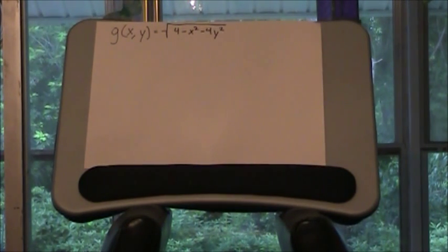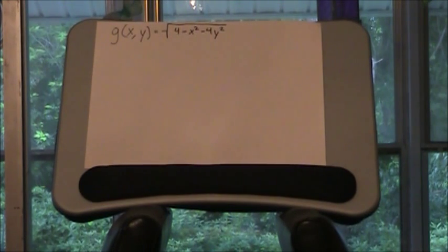The function g of x and y, which is the square root of 4 minus x squared minus 4y squared, is a little bit trickier because now there's spots where the function can become undefined and the range is affected greatly by that.